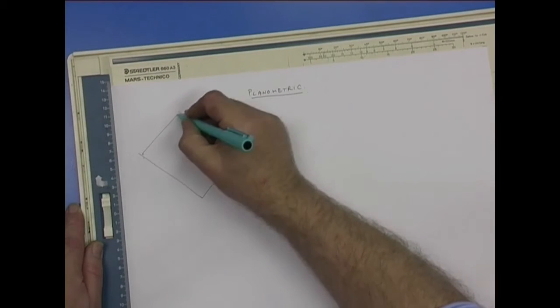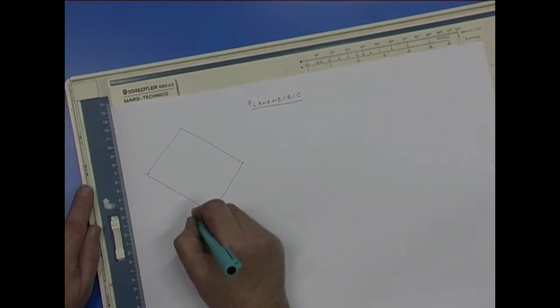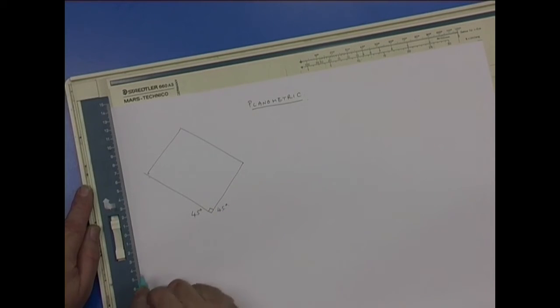Now I've drawn this at approximately 45 degrees. That angle and that angle must add up to 90 degrees for the true plan, because our plan is drawn at right angles. So there's a plan view of the room.